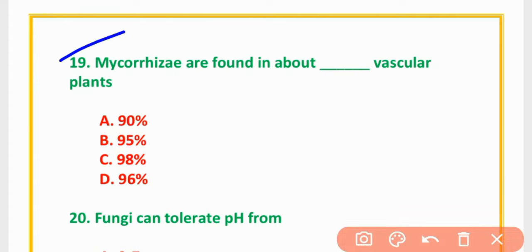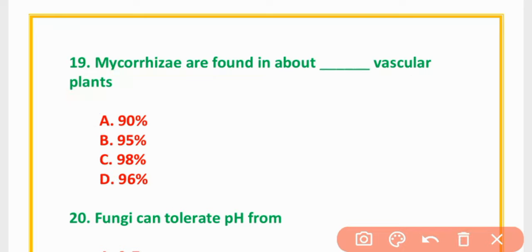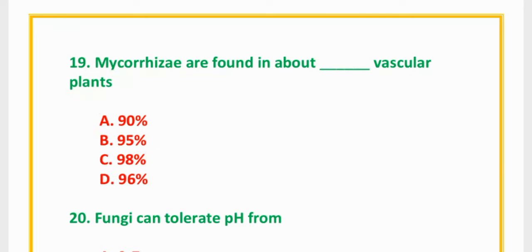MCQ Number 19: Mycorrhizae are found in about what percentage of vascular plants? Options: 95%, 98%, 96%. The correct option is option B: 95% of plants.